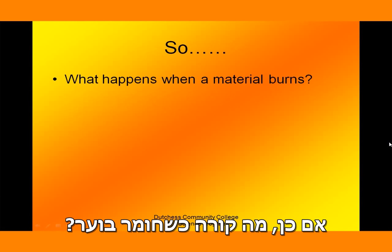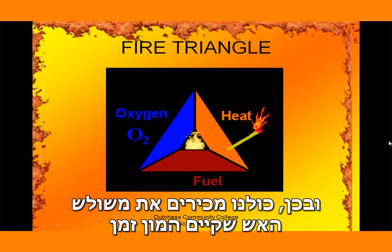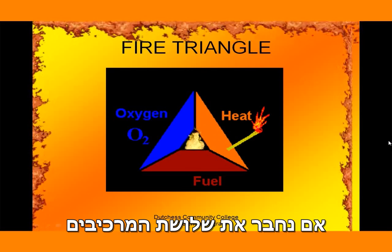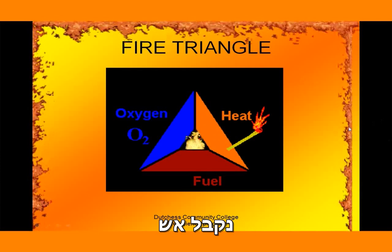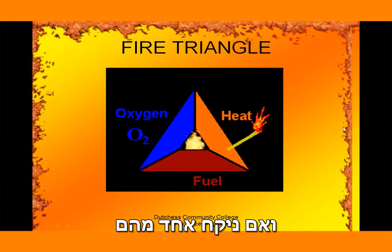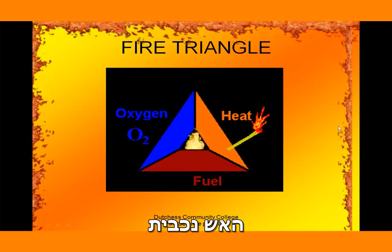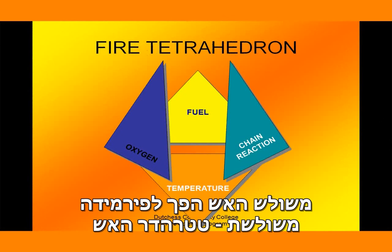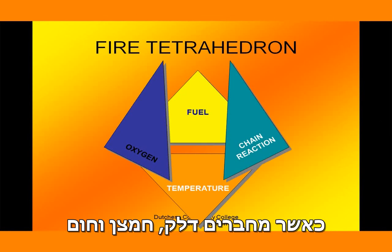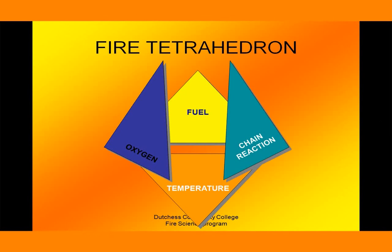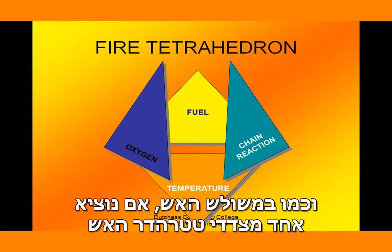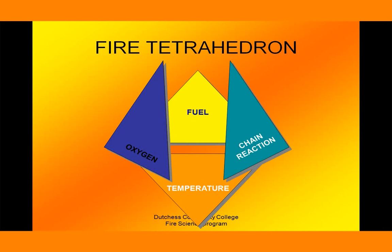What happens when a material burns? We're all familiar with the fire triangle: fuel, oxygen, and heat. Combine these three together and we've got fire, and if we take any one away, the fire goes out. Back in the seventies, they realized there was a fourth part — the fire triangle became the fire tetrahedron. Fuel, oxygen, and temperature/heat, when combined, have a chemical reaction that produces flammable vapors. Remove any one side of the tetrahedron and the fire goes out.